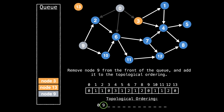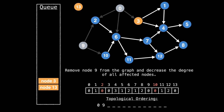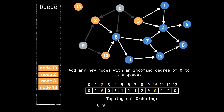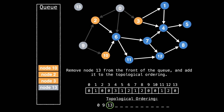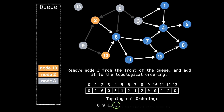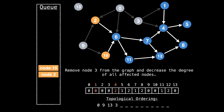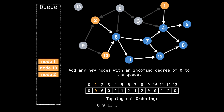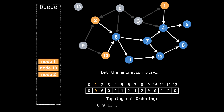Node nine is next in line, so remove it from the queue and add it to the topological ordering. Remove node nine from the graph and decrease the degree of all affected nodes, then add any new nodes with an incoming degree of zero to the queue — this includes node two and node ten. Remove node 13 from the front of the queue and add it to the topological ordering. Remove node 13 from the graph; you will notice that node 13 has no outgoing edges so no new node degrees are updated. Next, remove node three from the queue and add it to the topological ordering, remove it from the graph, and decrease the degree of all affected nodes.